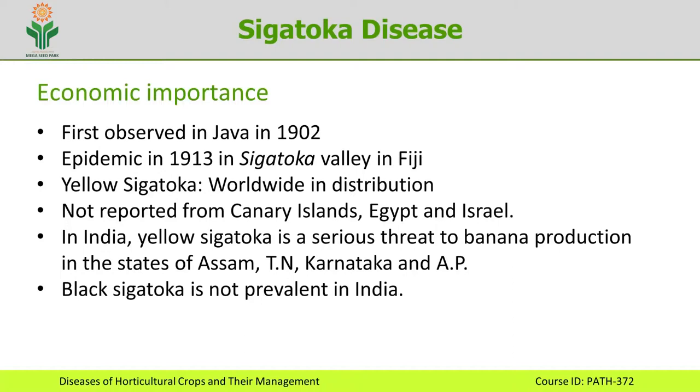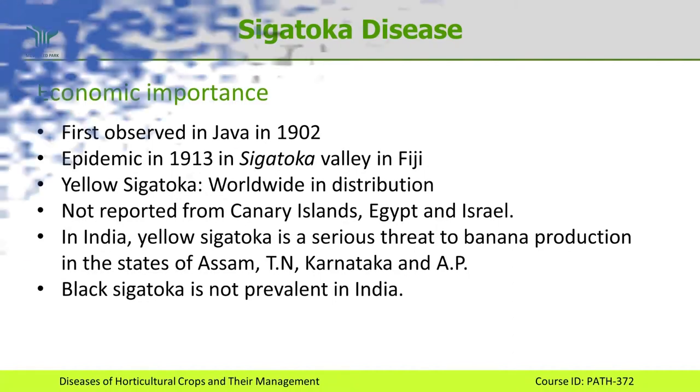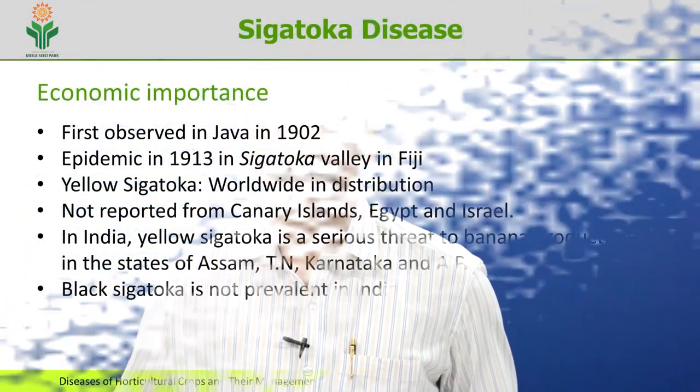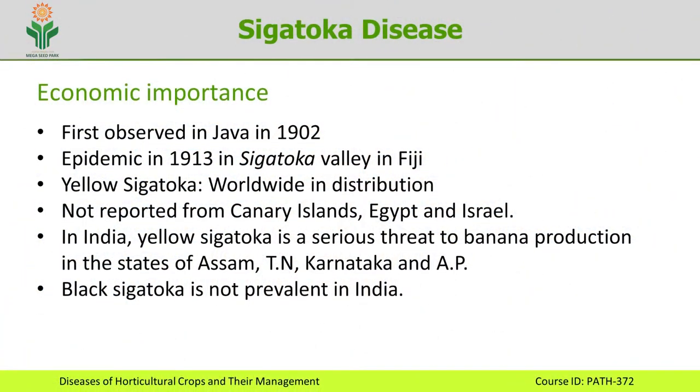There are two types of Sigatoka: yellow Sigatoka and black Sigatoka. Yellow Sigatoka is worldwide in distribution; however, it is absent from some countries like Canary Islands, Egypt, and Israel. In India, yellow Sigatoka is very important and black Sigatoka is not prevalent — it has not been reported from India. Yellow Sigatoka is a serious threat to banana production in the states of Assam and the southern states like Tamil Nadu, Karnataka, and Andhra Pradesh.